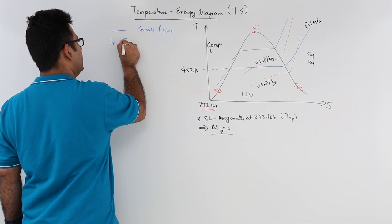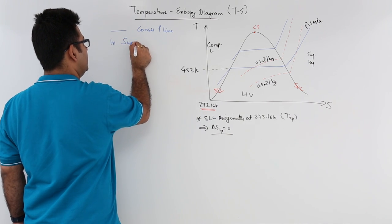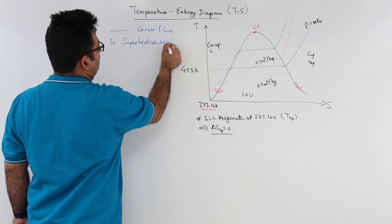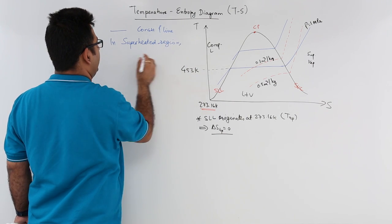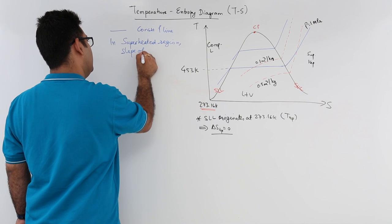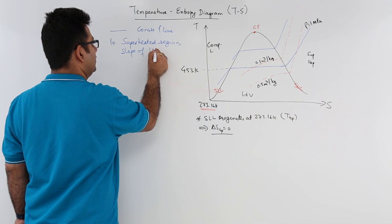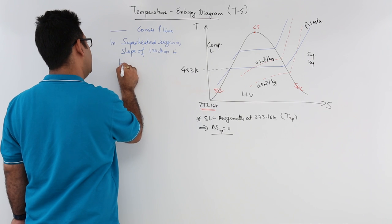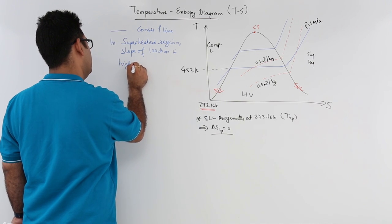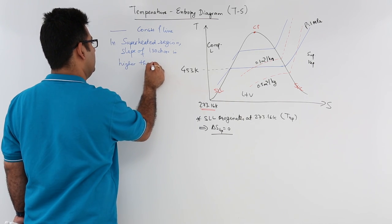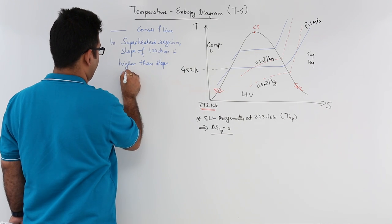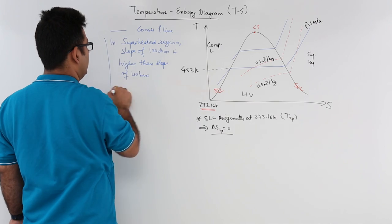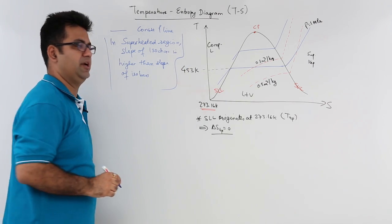So in the superheated region, the slope of isochores is higher than the slope of isobars. This is something you need to understand.